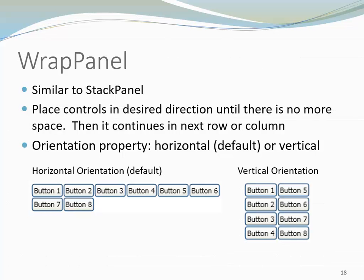When we set the orientation to vertical, we place one control below the other until the current column is filled, then we move up to the next column. Whenever we resize a Wrap Panel, the new position of controls is calculated. They are shifted around as appropriate in order to fill the rows or columns dependent on the selected orientation. Unless the whole window is filled, controls won't go out of sight.